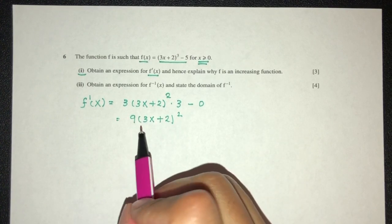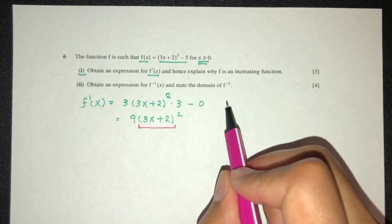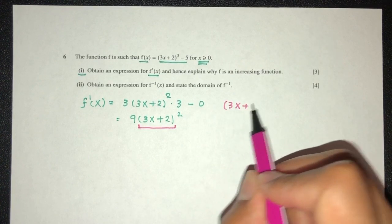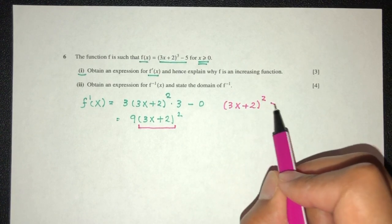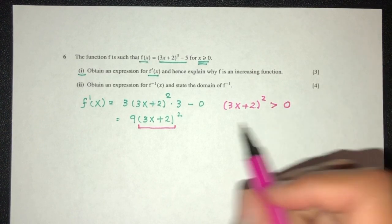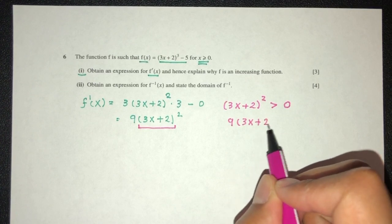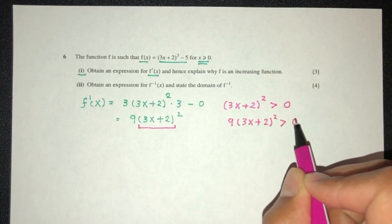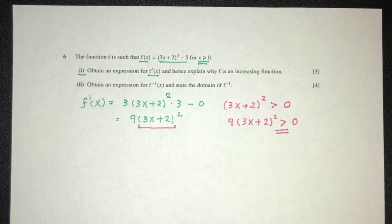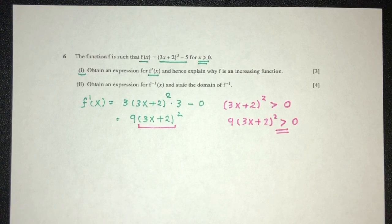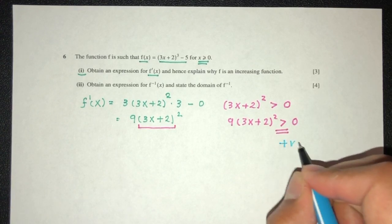So we can explain, since this value here, since 3x plus 2 squared has to be more than 0, we can confirm that 9 times will always be more than 0. Because of that, it is an increasing function. It is positive. That's the main idea behind this.